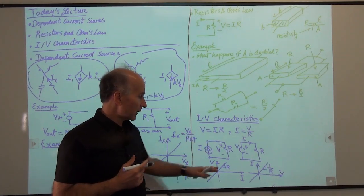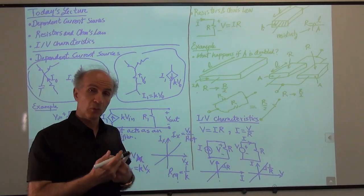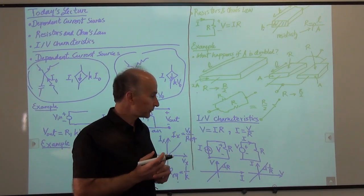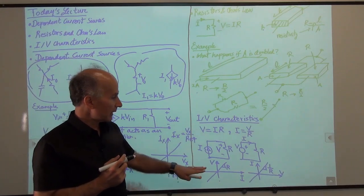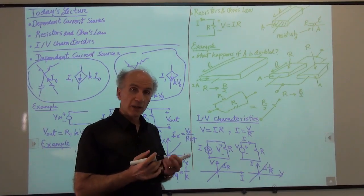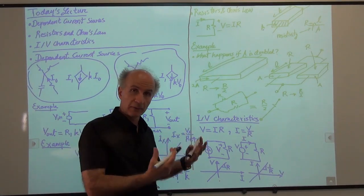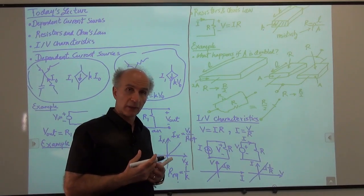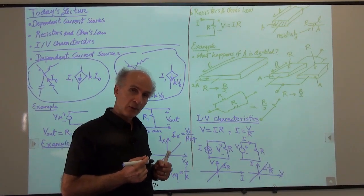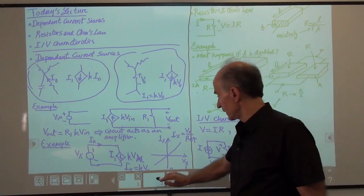We often rely on these types of plots in analyzing various devices, and they become more important as you go to more complex devices such as transistors in your future courses. Now that we have a definition for IV characteristics, they don't have to be applied only to resistors — we can apply them to any other two-terminal device, for example a current source or a voltage source.